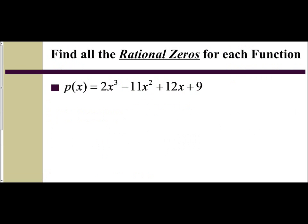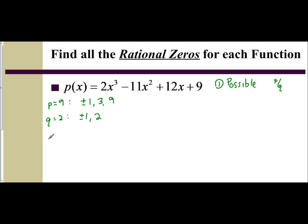So if we go to the next problem: 2x cubed minus 11x squared plus 12x plus 9. Again, the first thing we're going to want to do is make our p over q list — find our possible rational zeros. Here, p is 9, so the factors of 9 are plus or minus 1, 3, and 9. Q is 2, and the factors of 2 are plus or minus 1 and 2. So when we create our list, we take each p and divide by each q: 1, 3, and 9 divided by 1 gives plus or minus 1, 3, and 9. Then 1 divided by 2, 3 divided by 2, and 9 divided by 2 gives 1 half, 3 halves, and 9 halves. It's a much smaller list.